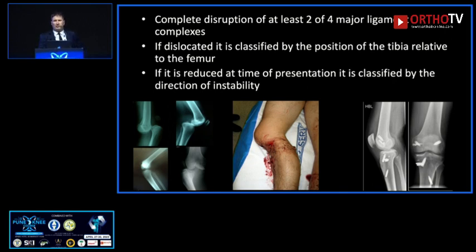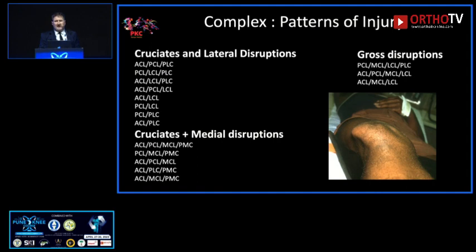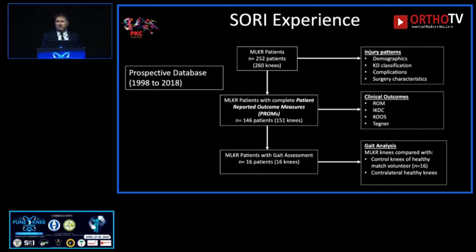The definition is a complete disruption of at least two of the four major ligament complexes. If it's dislocated, it's the position of the tibia relative to the femur; if it's reduced, it's the direction of major instability. The pattern of injury — there is no pattern — it's a heterogeneous group of multiple options for the way these ligaments can be disrupted.